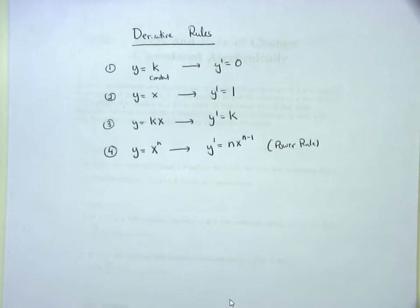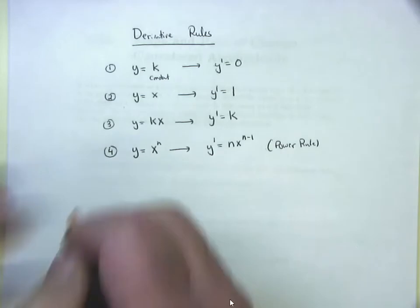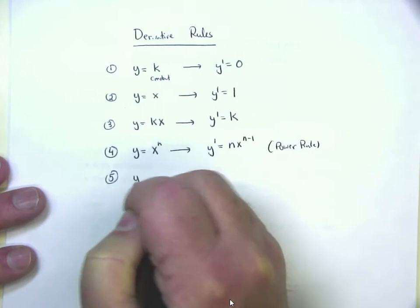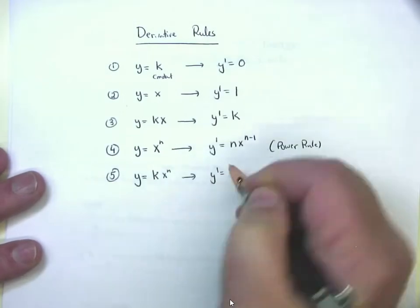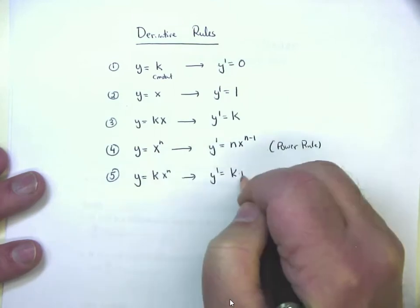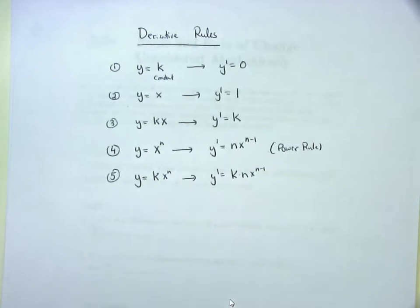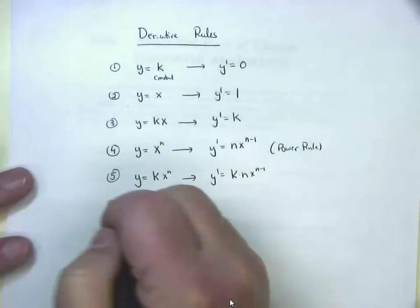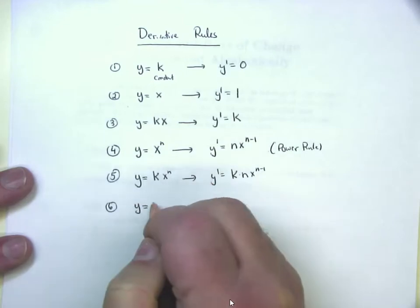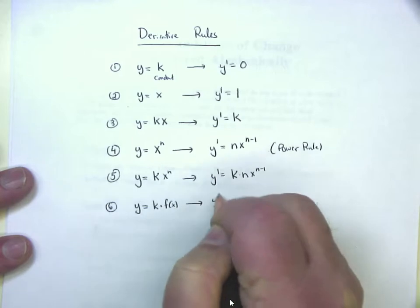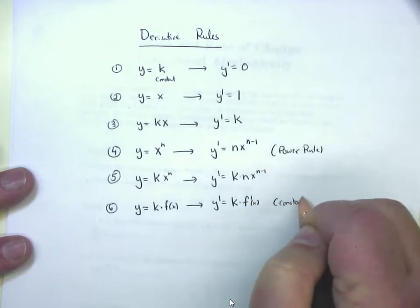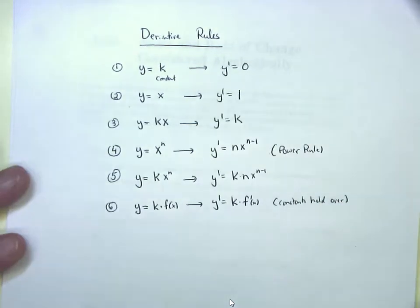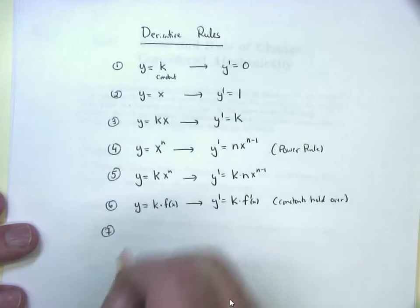Rule 5 is an extension of the power rule: if y = kxⁿ, then y′ = k·nxⁿ⁻¹ — hold the constant over. Rule 6 states: whenever you have a constant multiplied by a function, hold the constant and take the derivative of the function. Rule 7, the Sum/Difference Rule: if y = f(x) ± g(x), then y′ = f′(x) ± g′(x) — take the derivative of each term separately.